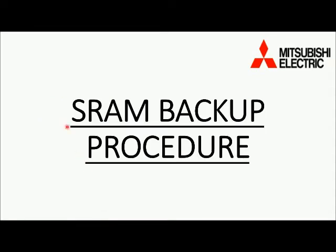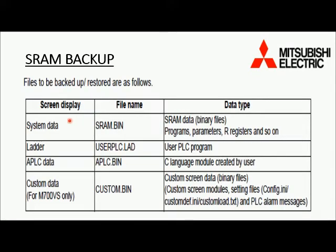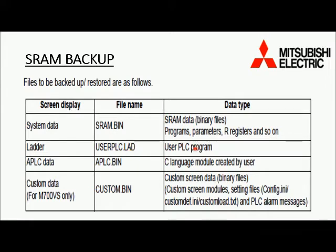Now we will explain about SRAM backup and how to take it. In SRAM backup there are several types of data. The first is system data, which comes in the SRAM.bin file — this file saves SRAM data in binary format, including programs, parameters, registers, and so on. The second is ladder, which comes in the uscrplc.lad file and contains the ladder or PLC of the machine.